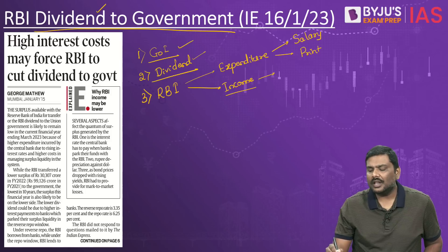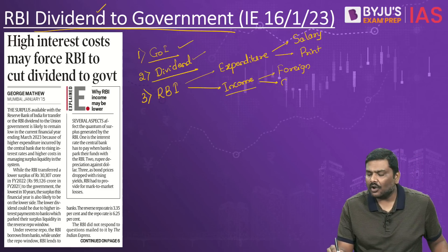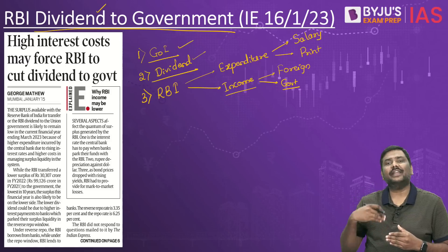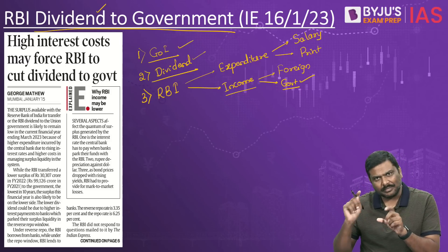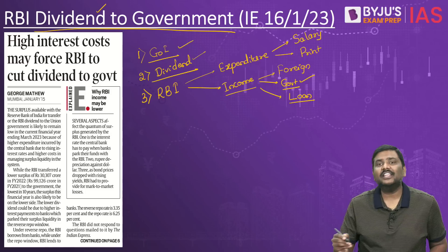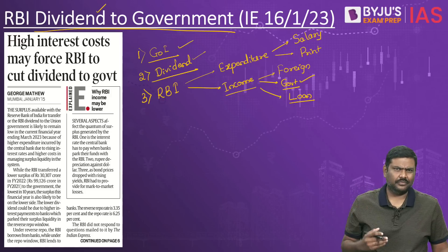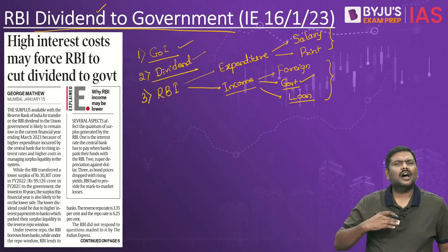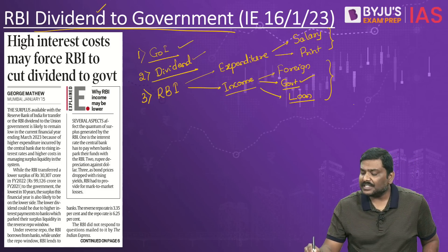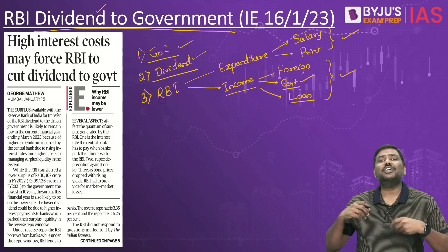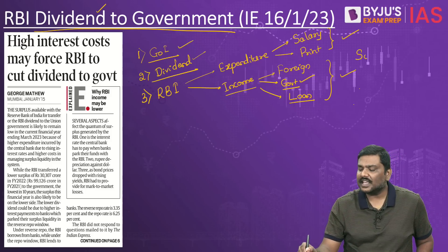For example, RBI holds a large amount of foreign assets on which it earns income. RBI also holds government bonds of Government of India, and whenever the government pays interest or coupon on them, RBI earns money. RBI also provides loans and lending facilities on which it charges a rate of interest — for example, repo. If income is greater than expenditure, for a commercial entity we call this profit; but since RBI is not literally a commercial entity, we call this a surplus.